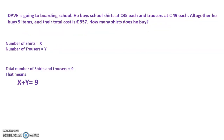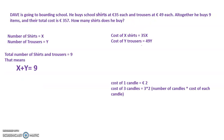According to the problem, the total number of shirts and trousers he bought is 9, that is, number of shirts plus number of trousers is equal to 9. So we use this detail in the problem.